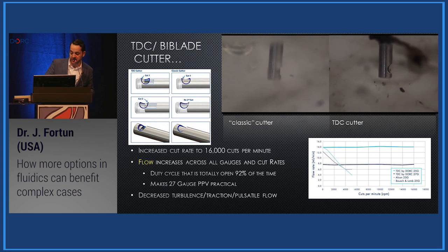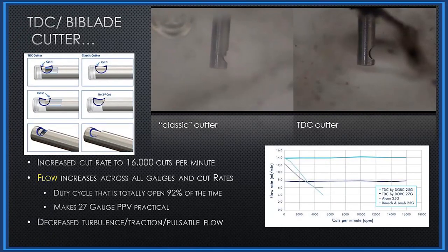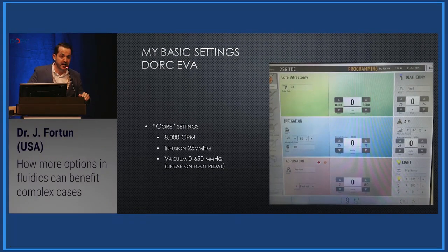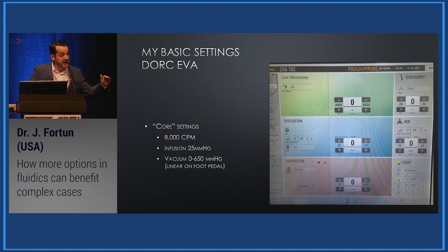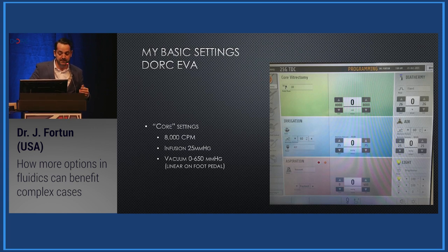Traditional cutters show a decrease in flow as cut rates increase, but with the TDC cutter you get a consistent, maintainable flow rate even at 16,000 cuts per minute. For most efficient vitreous removal in 3D mode on other machines, vacuum goes up while cut rate goes down. In shave mode they put you on a high cut rate and you alter your vacuum — that's proportional vacuum. The EVA is different: your core setting keeps you constantly at 8,000 or 16,000 cuts per minute with vacuum varying based on your foot pedal, and the TDC cutter is open 92% of the time.